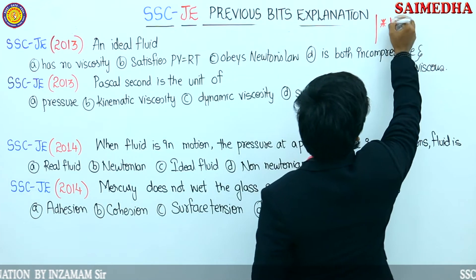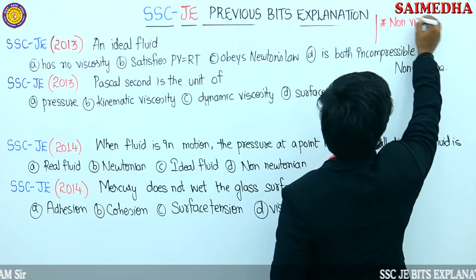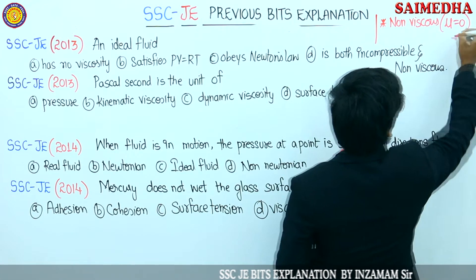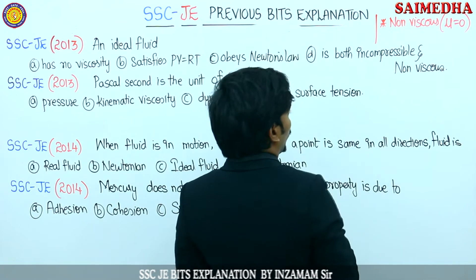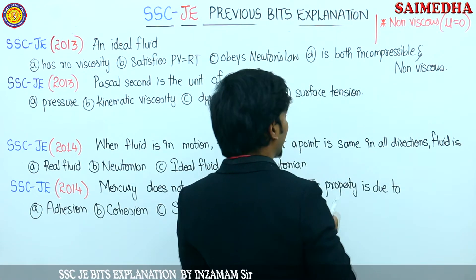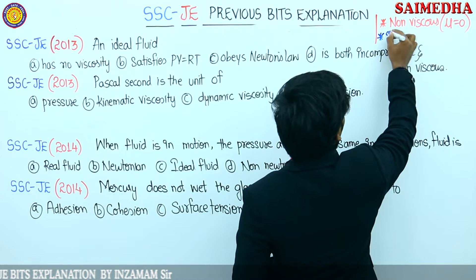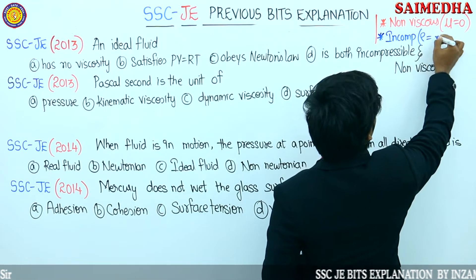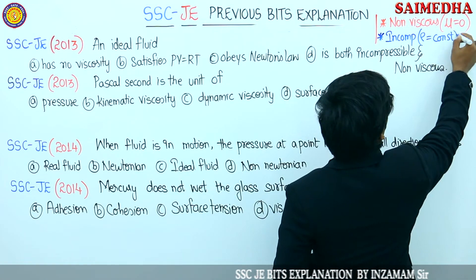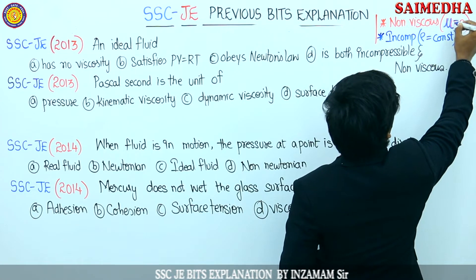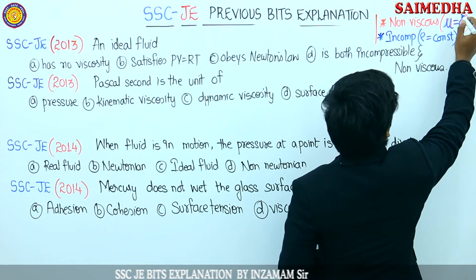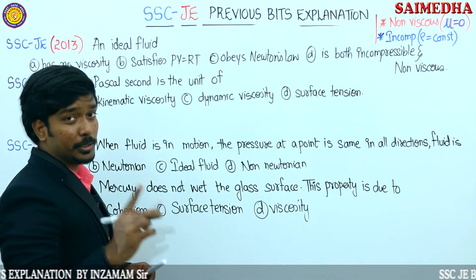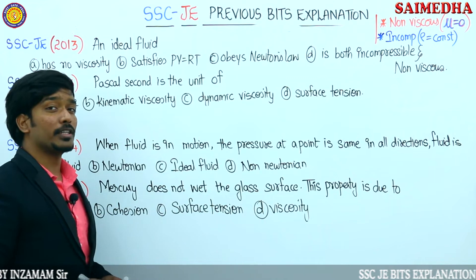First property: it is non-viscous. That is, viscosity is equal to 0. The second point: ideal fluids are incompressible fluids, meaning density remains always constant. Viscosity equals 0 and density remaining constant - these are the two points you need to remember whenever we talk about ideal fluid.